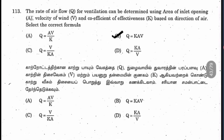Question 113: the rate of air flow Q for ventilation can be determined using the area of the inlet opening A, velocity of wind V, and coefficient of effectiveness K based on direction of air. We know Q = A × V, so K must be multiplied in. Only option B is the correct answer.